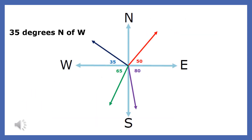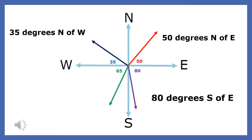We will always denote the direction of a resultant by stating the angle the force makes with either the westerly or easterly direction. Here are some examples: 35 degrees north of west, 50 degrees north of east, 80 degrees south of east, and 65 degrees south of west.